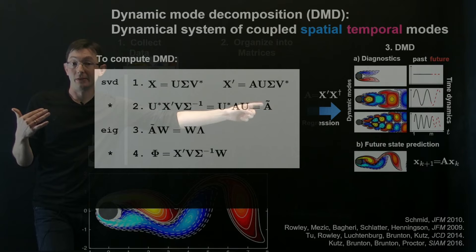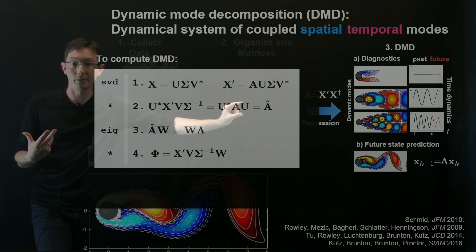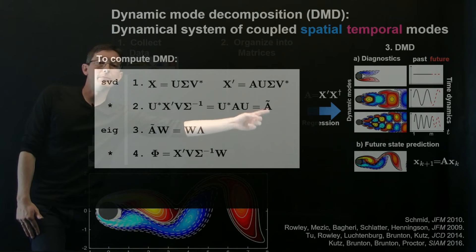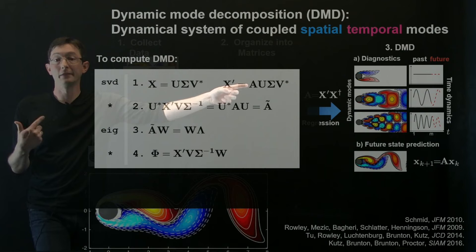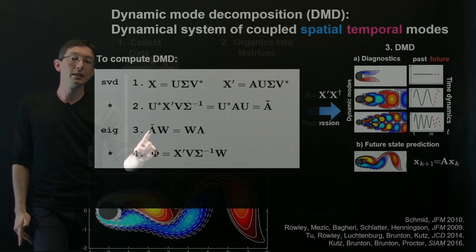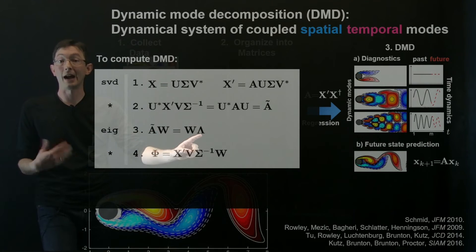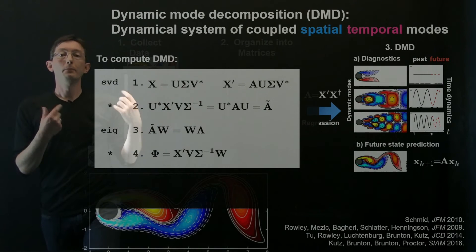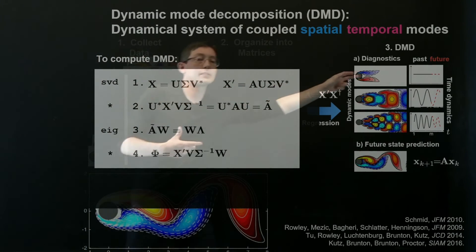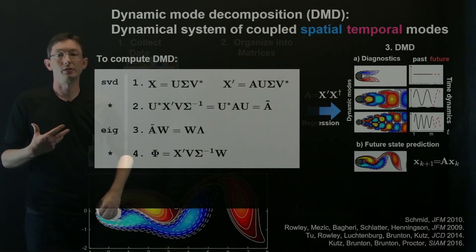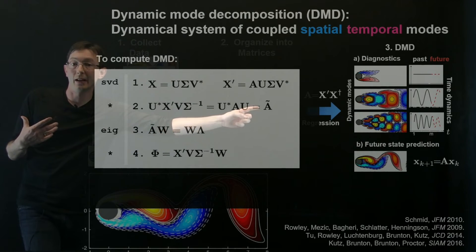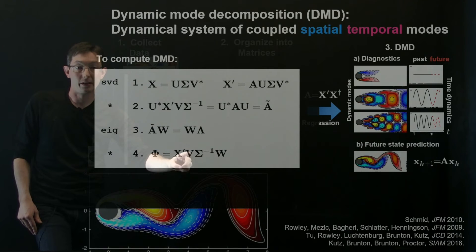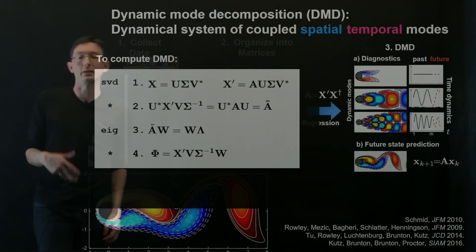And it has the same eigenvalues as the big A matrix. So that's something you can prove. You can actually go through this formulation and prove that this little A tilde has the same eigenvalues, the same non-zero eigenvalues as big A. And so I can compute the eigen decomposition of this little matrix to figure out what my eigenvalues of the big matrix are. So that's the step here. I do A tilde W equals W lambda. So W are my eigenvectors and lambda are my eigenvalues of my reduced dynamic operator A tilde. And so now I have the eigenvalues, but what I really wanted were the eigenvectors of A. I wanted these because those eigenvectors are these mode shapes over here. Those are my dominant coherent structures.